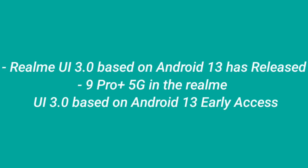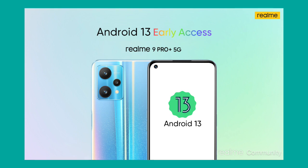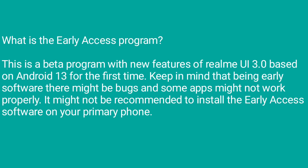Recently Realme has released Realme UI 3.0 based on Android 13, also called the Early Access Program. This is actually a beta program that allows users to experience the whole new features of Realme UI 3.0 based on Android 13 for the first time. Being early software, there might be bugs and some apps might not work properly. It is not recommended to install the early access software on your primary phone.